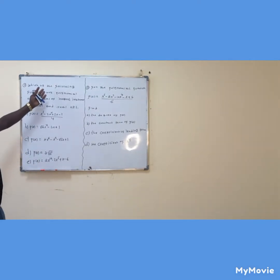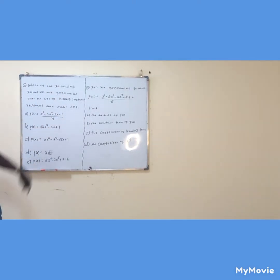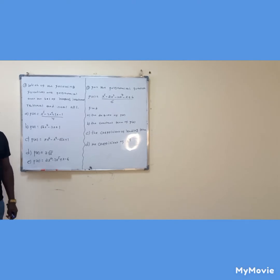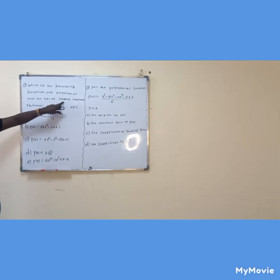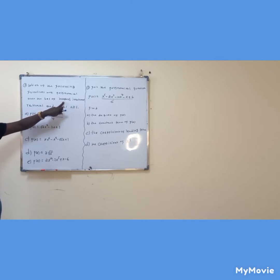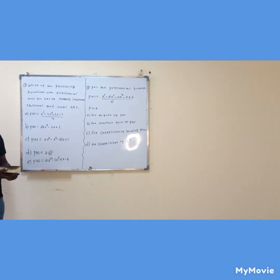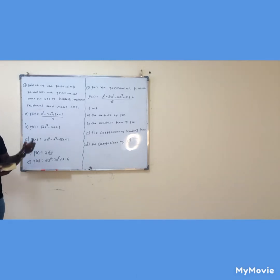Now look at this one. Which of the following functions are polynomial over the set of integers, irrational, rational, and real numbers? If we have a polynomial, that is a polynomial over the integers. If we have a polynomial, it is a polynomial over the set of irrationals. And this polynomial over the set of real numbers — that is a polynomial over the set of real numbers.